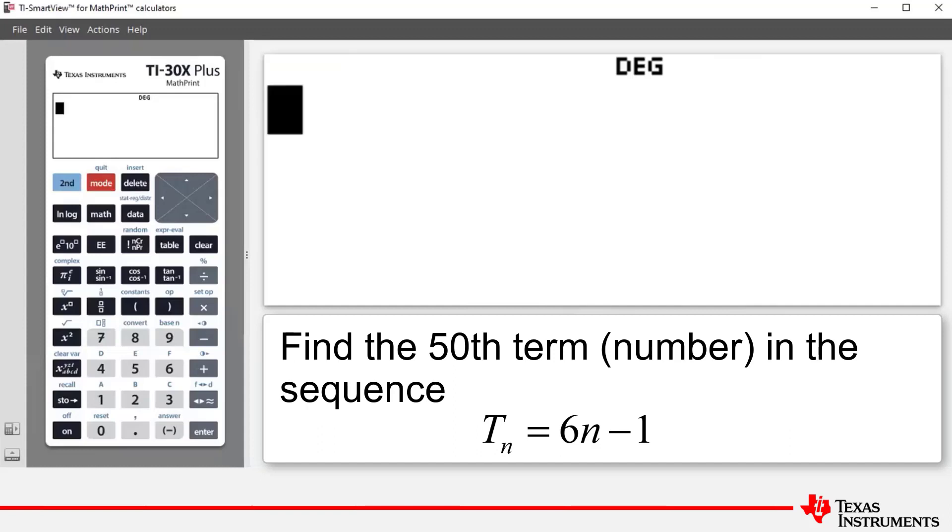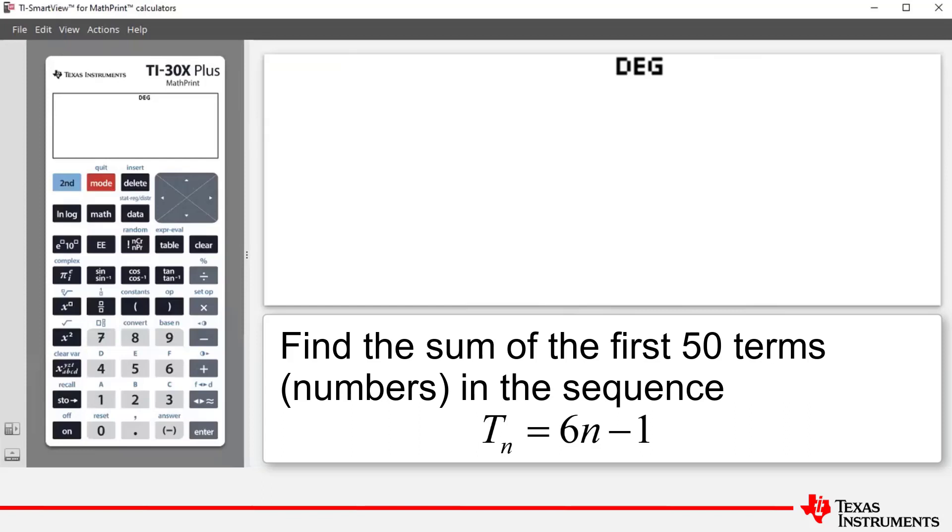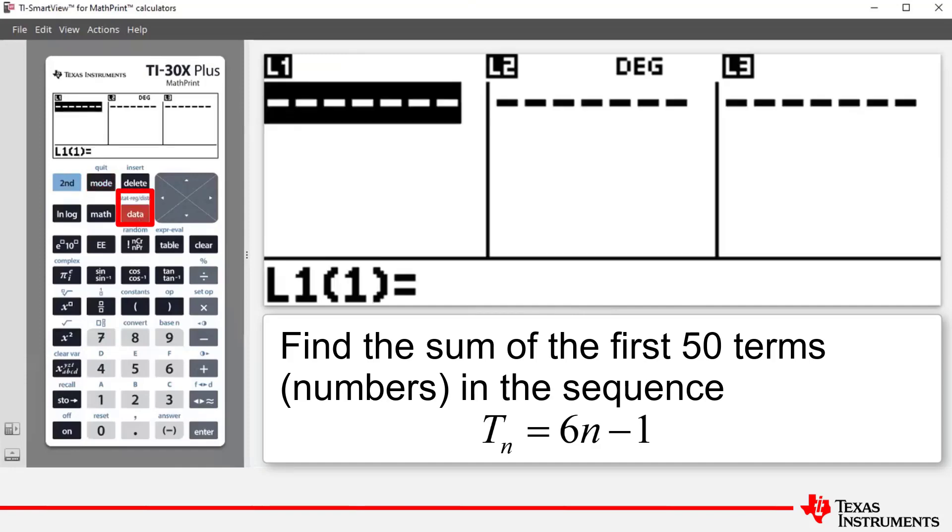But part C we're going to use the list feature of the calculator to determine the sum of those first 50 numbers. To do this we're going to press data to access the lists.